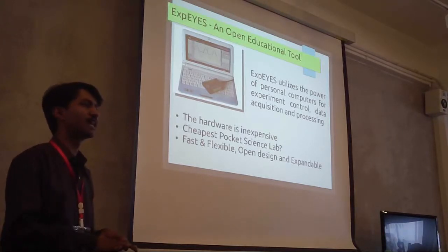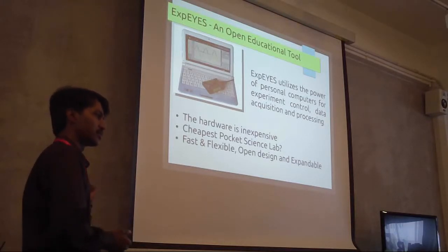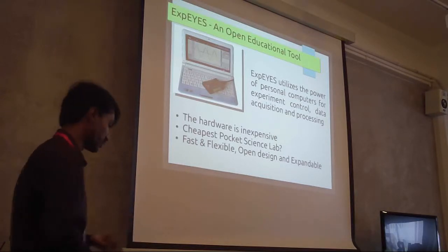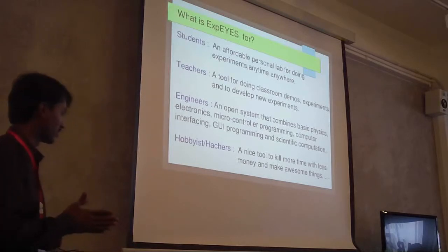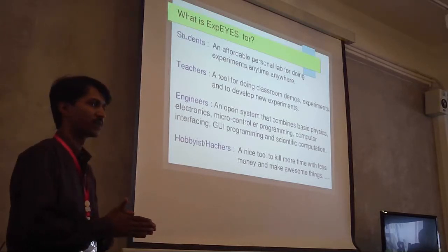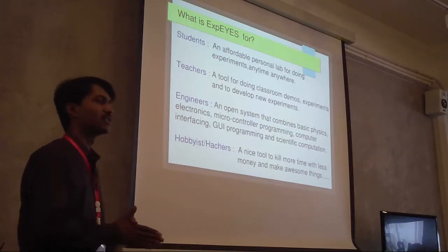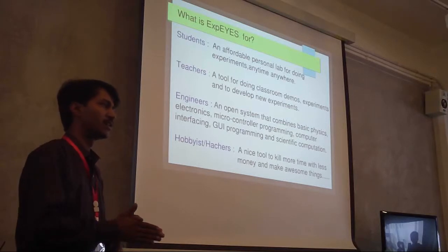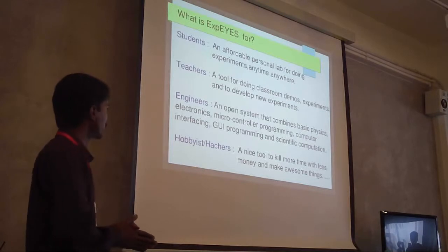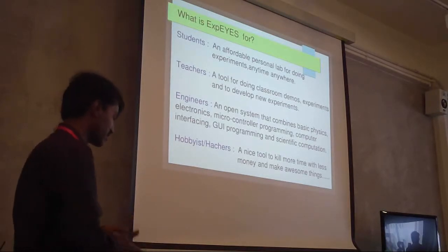The hardware is inexpensive - I can claim it is the cheapest pocket science lab in the world. It is fast, flexible, and the design is open. You can use ready-made GUIs available, or access the source code, modify it, and use it for your own experiments. X-PIES is for students learning by self-exploration, for teachers as a demonstration tool that can bring the lab to the classroom, and for engineers and hobbyist hackers as a testing device.